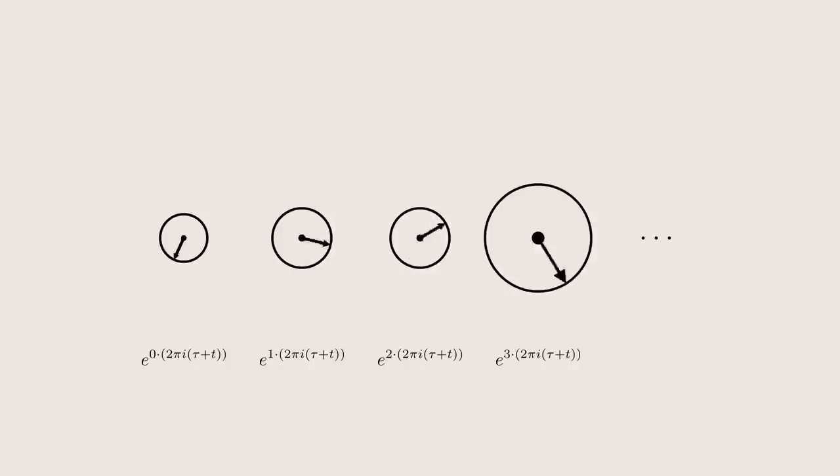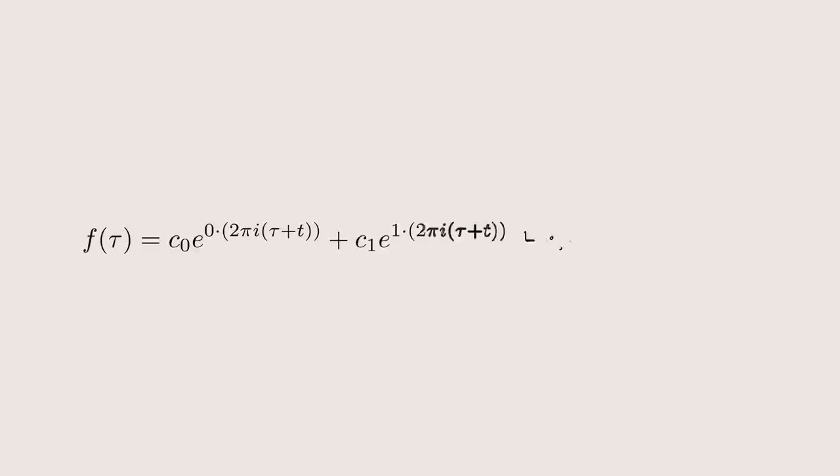Rewriting the entire modular form as a Fourier series is called the q-expansion, because for whatever reason you replace the term e to the 2 pi i z with a q, so the q term, confusingly, is a function of z itself. This q-expansion is an extremely useful method of describing a modular form, because we essentially get a polynomial. Most modular forms and functions you are going to see will be written down in this way.